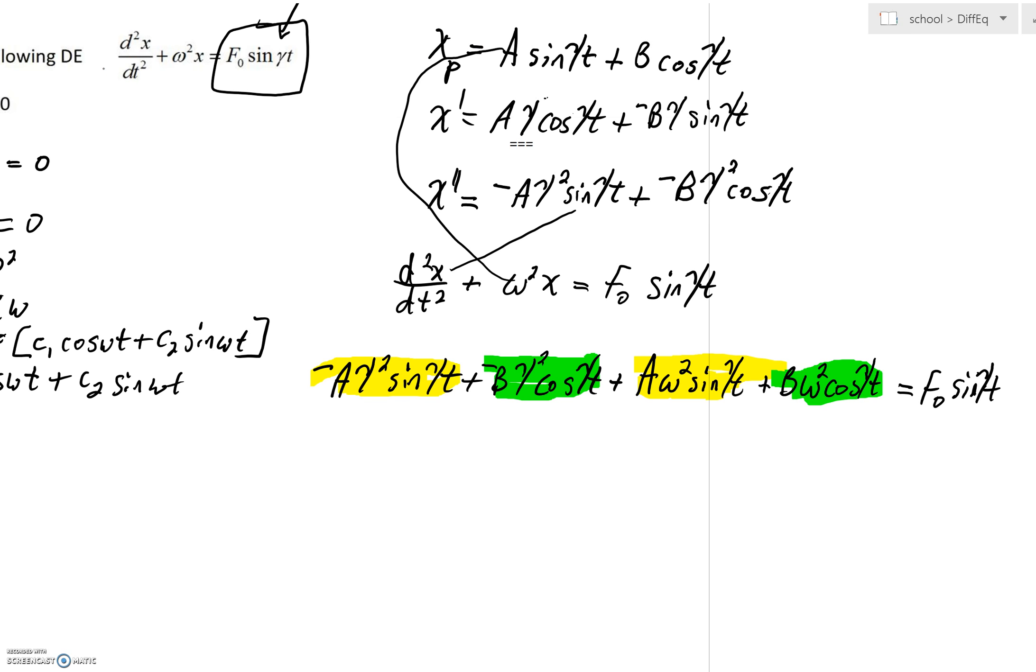we've got an A for both of those. You could even factor out an A there. We'd have an ω² - γ², this γ² right here.